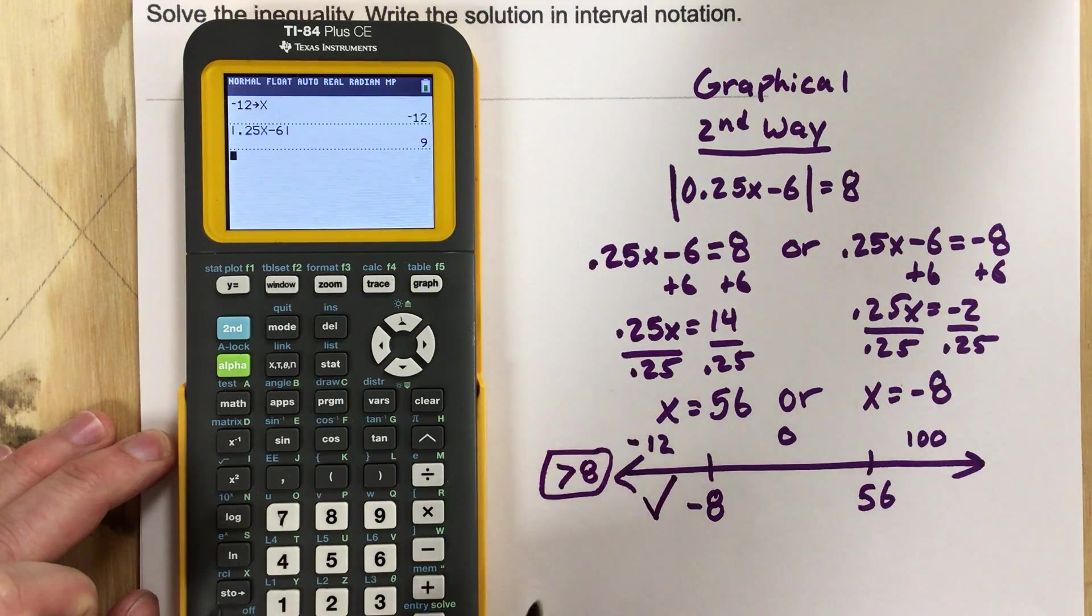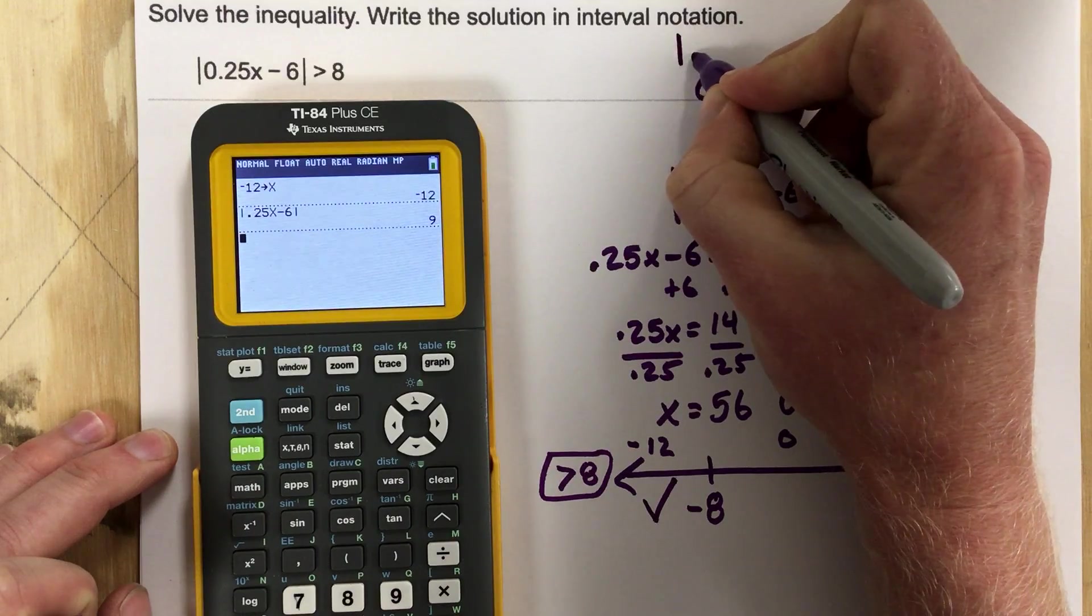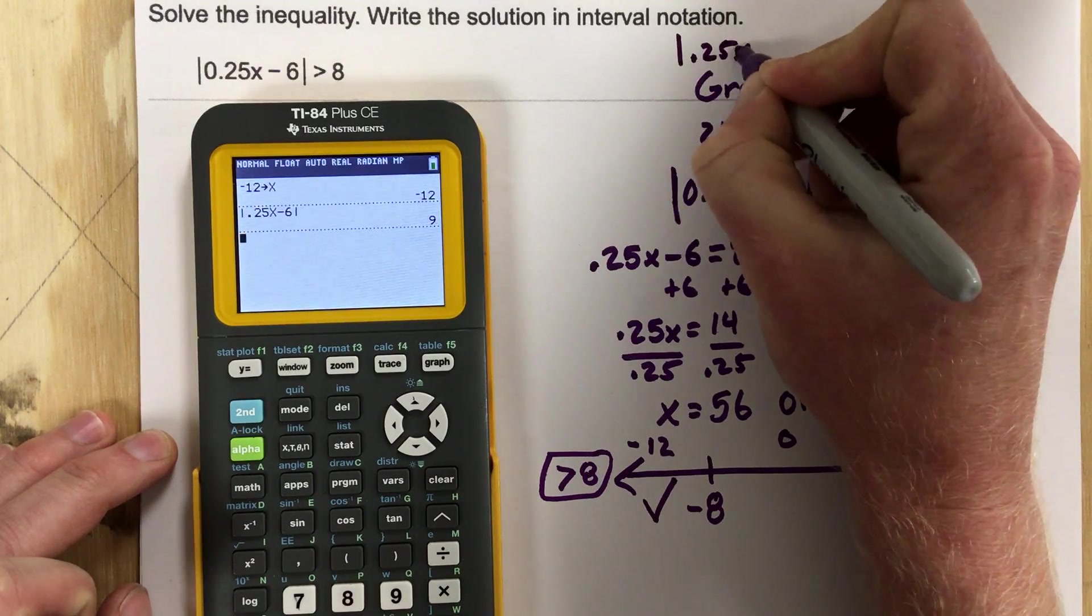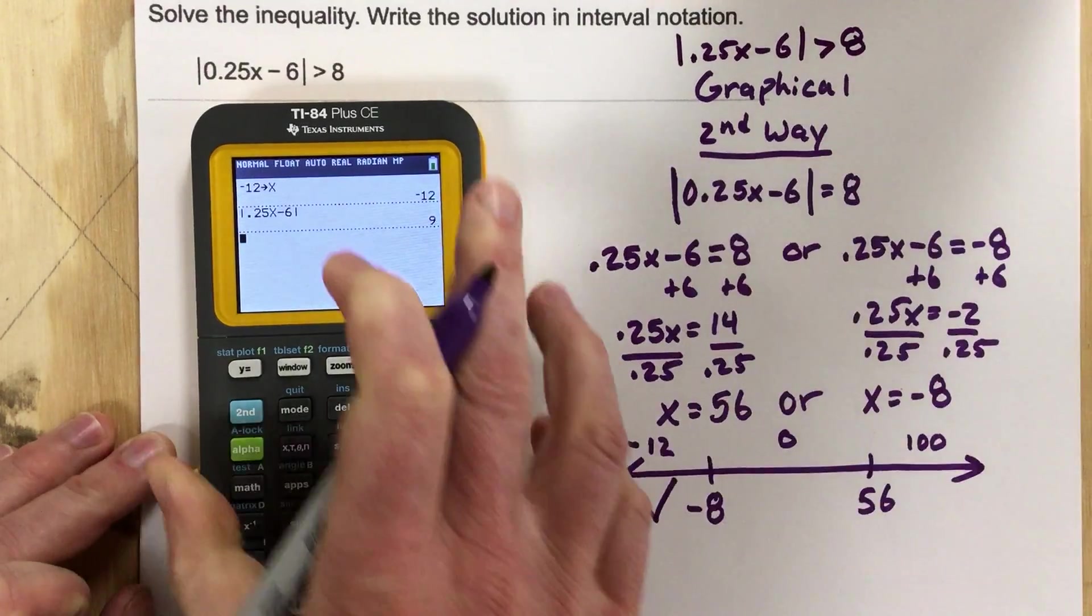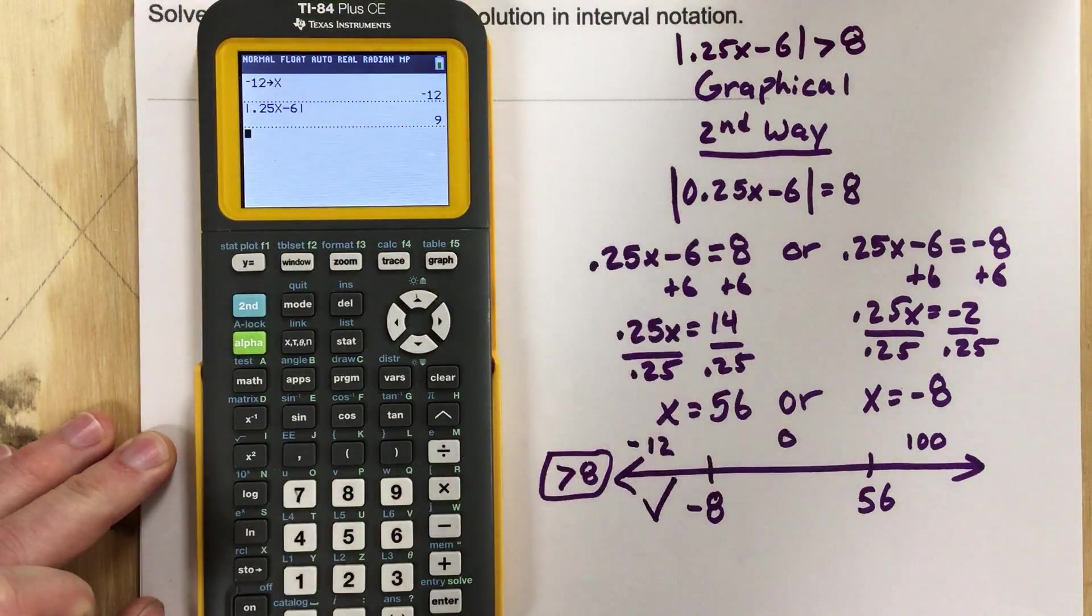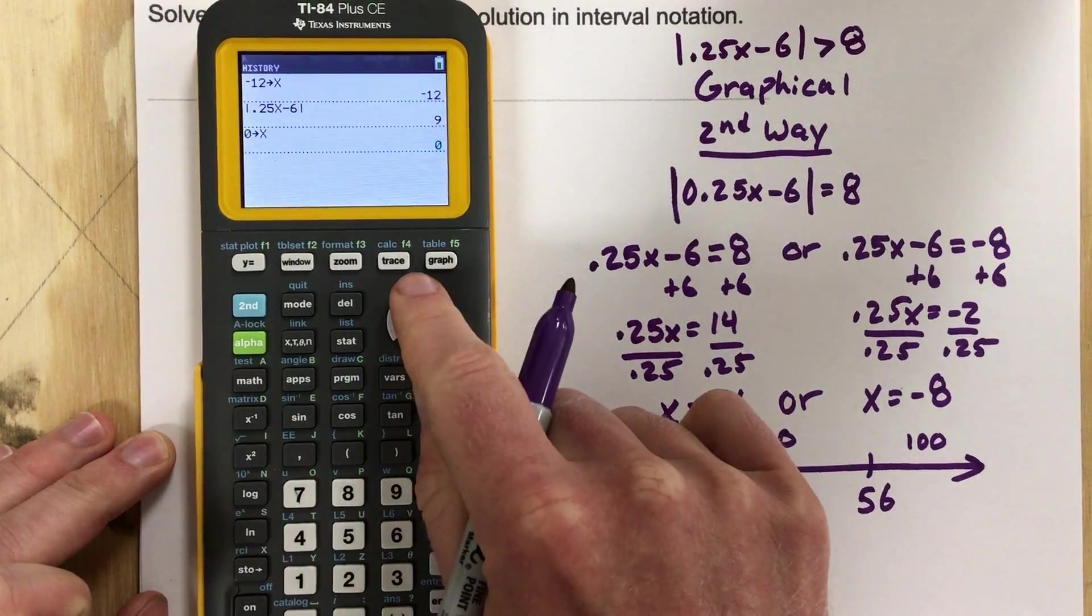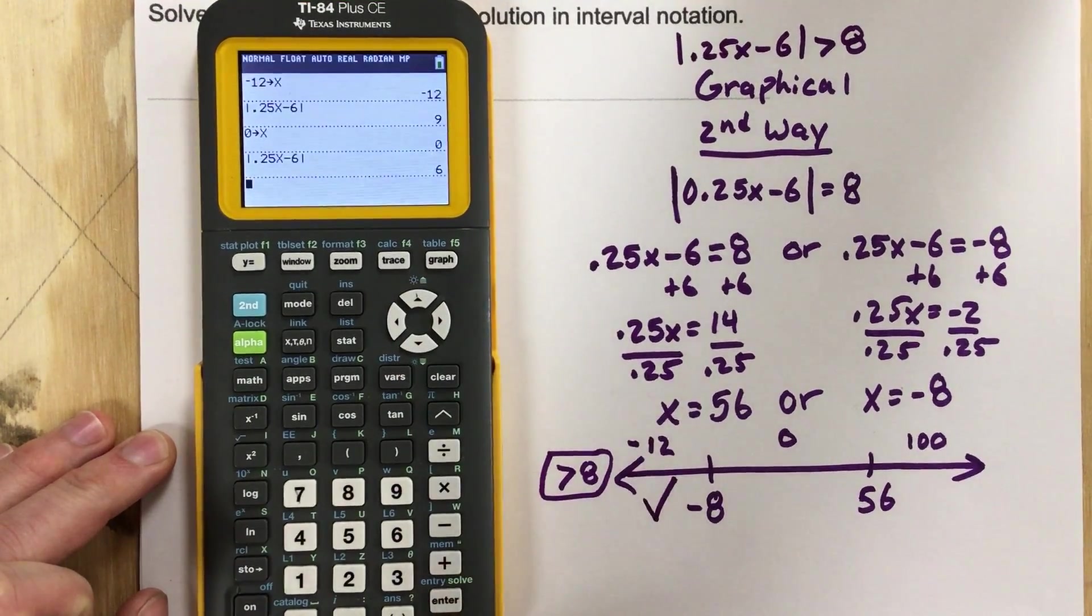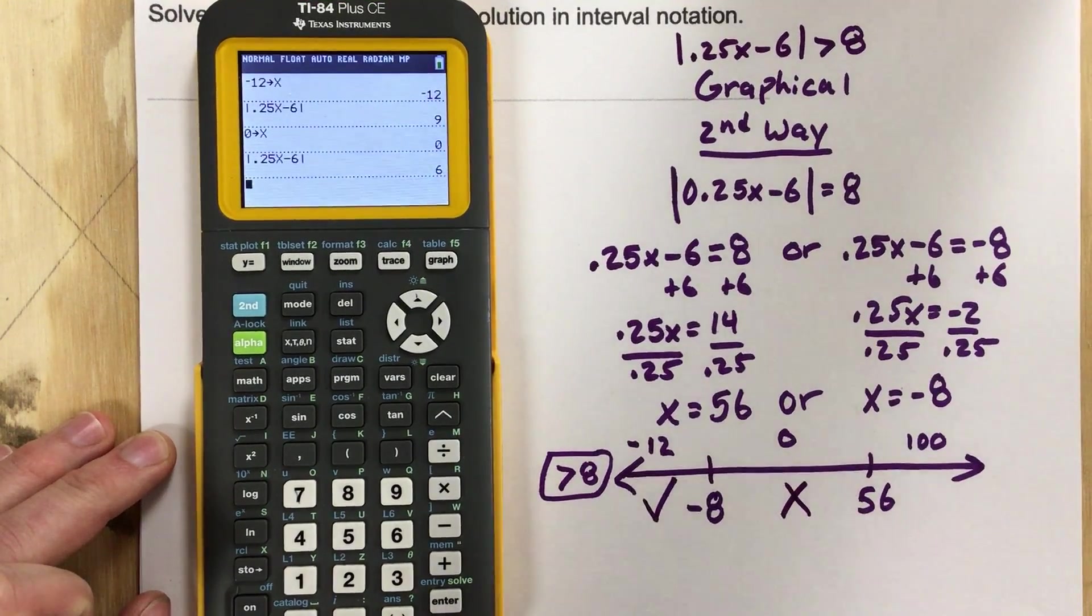Now I'm going to store zero, and I'm just going to write the equation out here so you can see it. This is 0.25x minus 6 greater than 8. That way I can put my calculator here. I'm going to store zero as x, go up and grab that. That gives me 6, so is 6 greater than 8? No, this area doesn't work.